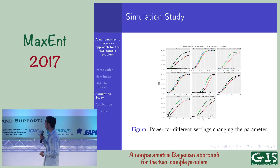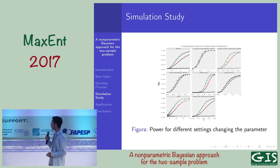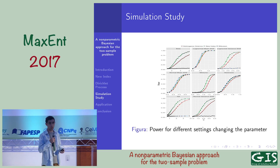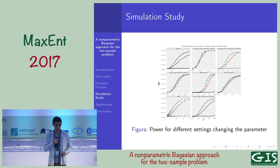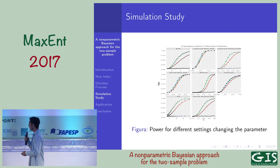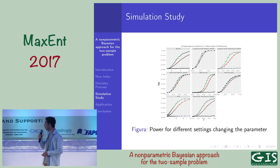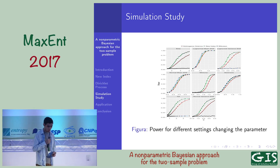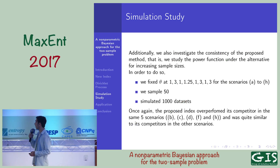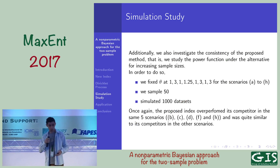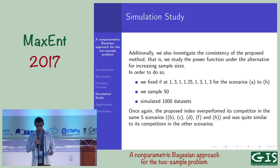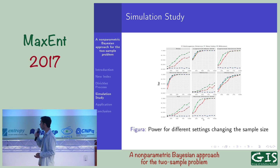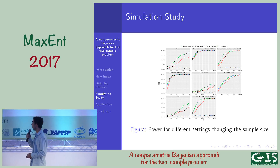Our index corresponds to the green line in the power function plots. In almost all scenarios, our index shows better results than the Kolmogorov-Smirnov and Wilcoxon tests. The y-axis corresponds to the power and the x-axis corresponds to the change in parameter theta. Additionally, we investigate the consistency of the proposed method by studying the power function under the alternative for increasing sample size, and again our index showed better results than the Kolmogorov-Smirnov and Wilcoxon tests.